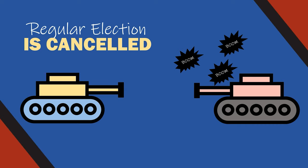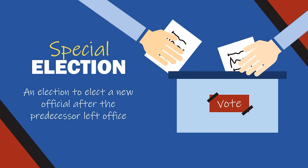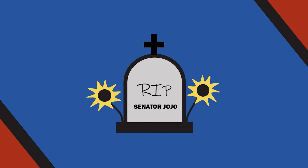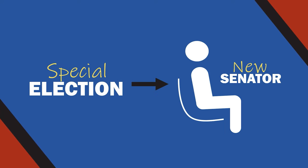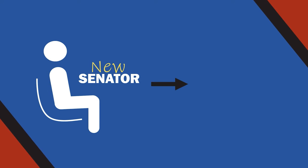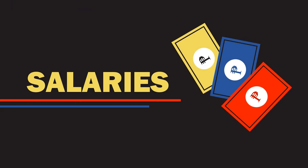A special election will also be held to elect a new official after the predecessor left office. For instance, if a senator died in a car crash, an election will be made to elect a new senator for the vacant position, but the one elected will serve only for the unexpired term. Next, salaries of senators and members of the House of Representatives shall be determined by law.